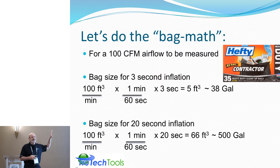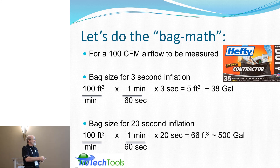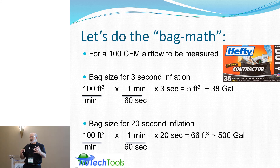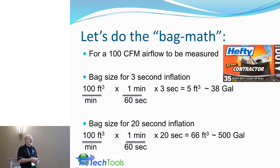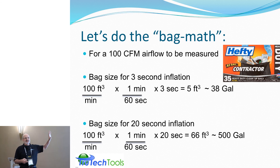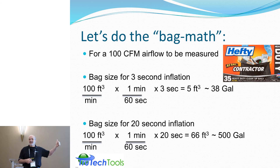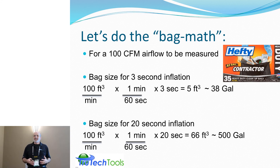Doing the bag math: for 100 CFM airflow, it works out to a 38-gallon bag, which seems reasonable — contractor bags are in the 35 to 42-gallon range. But they're pretty heavy and thick, which will impact consistency. For a 20-second inflation, it's a 500-gallon bag — I challenge you to fill that with water and measure it. You also need a stopwatch for the bag inflation method. This part of the standard seems like it should be revisited.